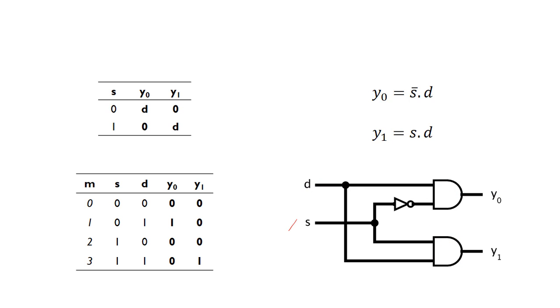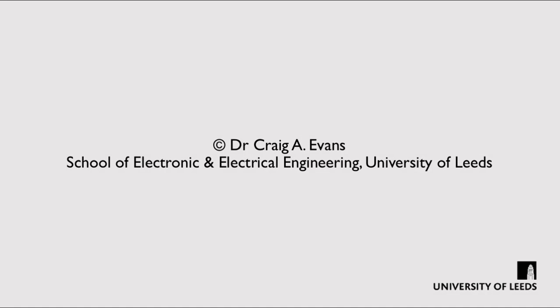When s is 1, the top branch is going to be 0, so we know that output will be 0—effectively switched off. And d is going to be sent to this output.